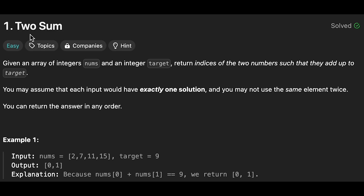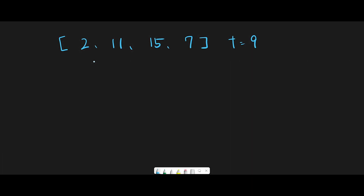Hey everyone, today we are going to solve the LeetCode question Two Sum. So let me explain with this example: [2, 11, 15, 7] and the target is 9. The description states each input would have exactly one solution, so that means if we check all possible pairs, we will get the answer.